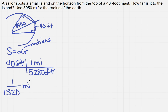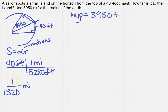How are you going to find the hypotenuse? If I'm going to find the hypotenuse to the island, it's going to be different than just the radius of the Earth. My hypotenuse — I'm going to have to find: there's the radius, and then I need to add to that what I just found for my mast, which is 1 over 1,320. So the hypotenuse is 3,950 plus 1 over 1,320.